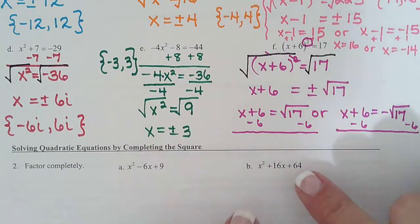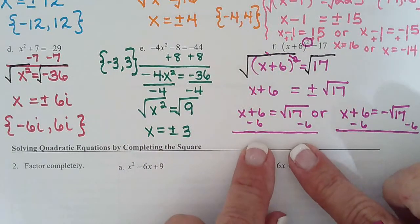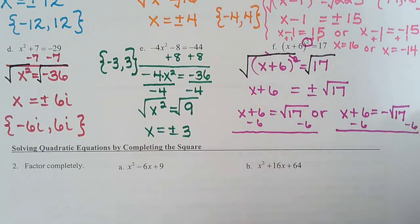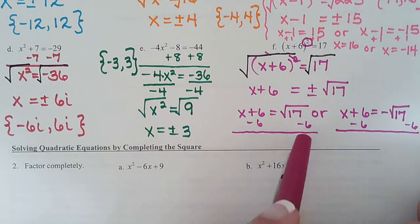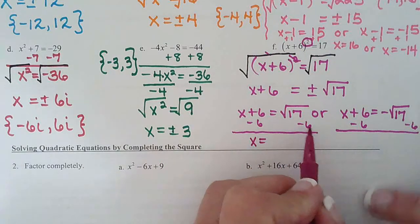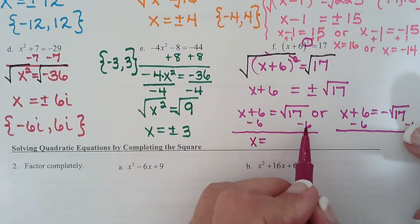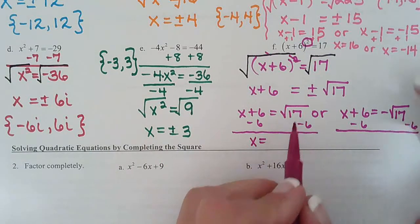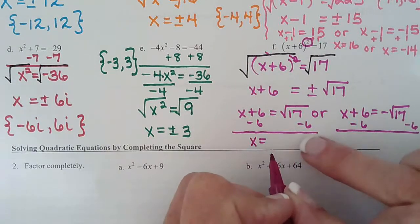We're just finishing up problem 1F on the last video, so let's write our two solutions. Order doesn't really matter. I generally like to have my radical second because I know what's coming—quadratic formula—and it always has the radical second. When I write this first solution, notice how I didn't write the negative 6 underneath, because you can't subtract 6 from a radical, so you have to write it as two terms.